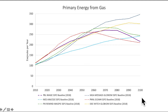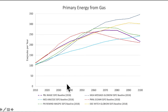Let's think about some futures for natural gas. This is a graph of primary energy from gas in exajoules per year from 2010 out to 2100 for six different integrated assessment models. In a world heading towards a little above four degrees, all the models show that we would burn more gas in this business-as-usual future.